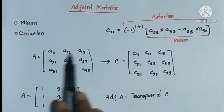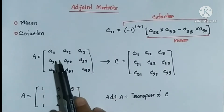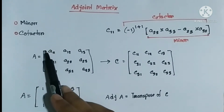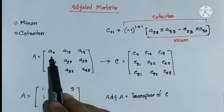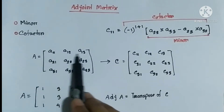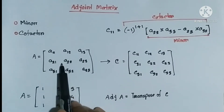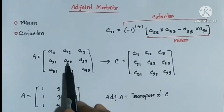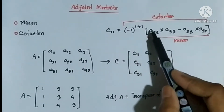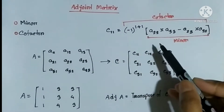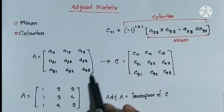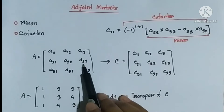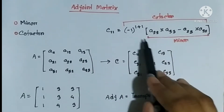Let's write a matrix. As we determine matrix A, we want to create a given column on row one and column one. To find the minor at a position, you need to find the determinant — for example, a(2,2) into a(3,3) minus a(2,3) into a(3,2) — and this portion is our minor for that position.